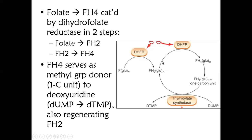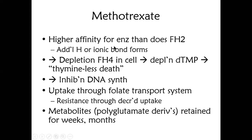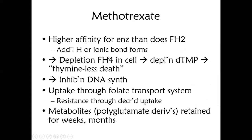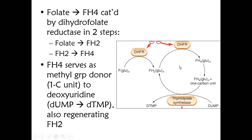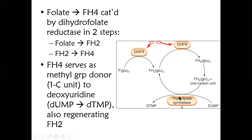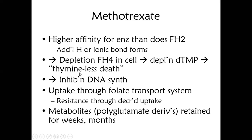If you understand this diagram, it is very easy to understand the mechanism of anti-metabolites like folic acid analogs. Methotrexate has higher affinity for the dihydrofolate reductase enzyme than FH2 itself has. So where FH2 is converted to FH4, this enzyme is inhibited by methotrexate. Methotrexate binds through additional bonds and ionic bonds, causing depletion of FH4, which leads to depletion of dTMP.